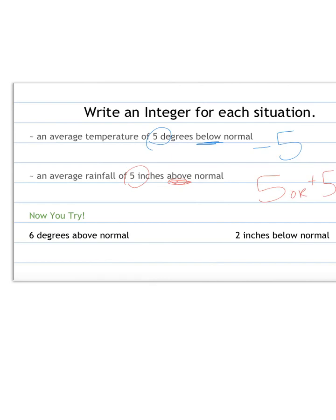A couple here for you to try. 6 degrees above normal. Well, above again tells us positive, so it would be 6 or positive 6. 2 inches below normal. Below tells us negative, so negative 2.